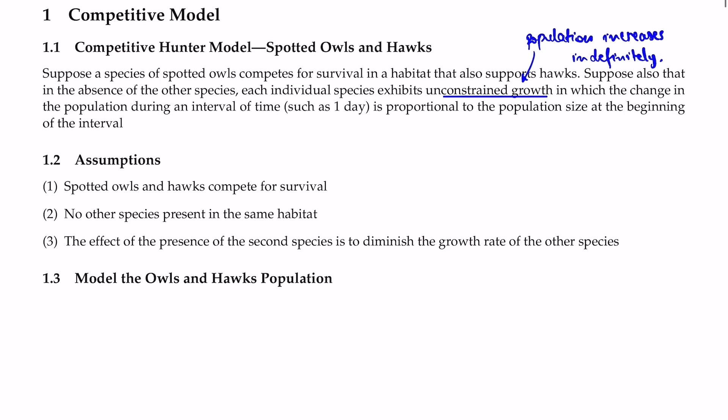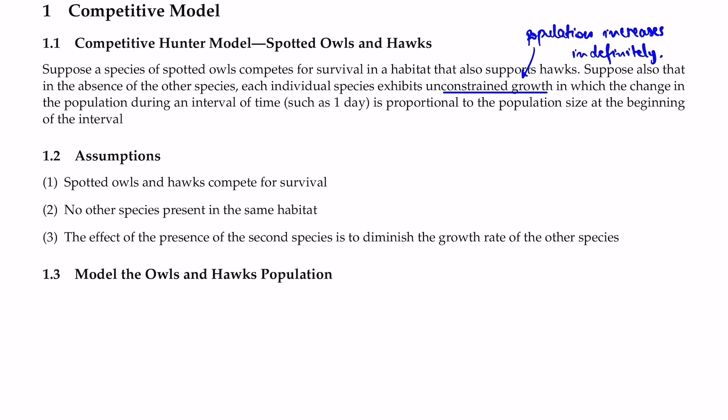The assumptions we're going to make: spotted owls and hawks compete for survival. In the presence of owls, the population of hawks will decrease, and vice versa — in the presence of hawks, the population of owls will decrease over time. No other species are present in the same habitat. The effect of the presence of the second species is to diminish the growth rate of the other species.